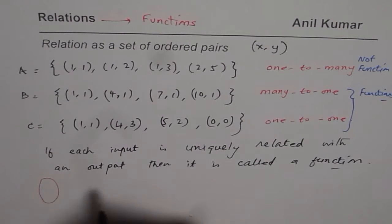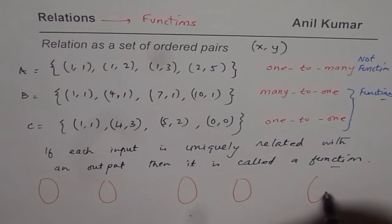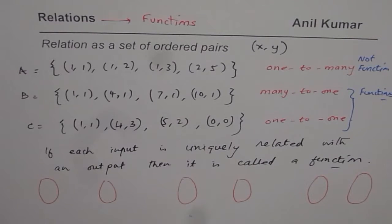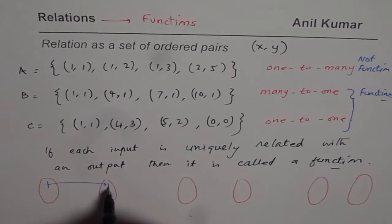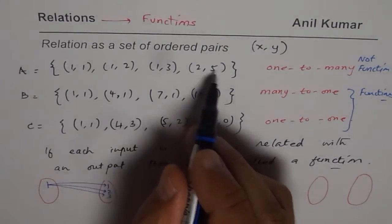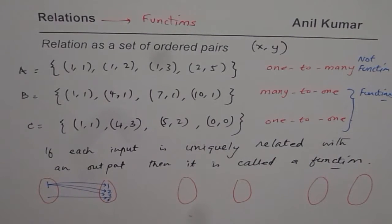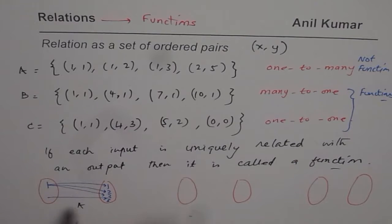You can also see this with the help of a mapping diagram. In sets A, B, and C, let me draw the mapping diagrams. For relation A: 1 is linked with 1, then 1 is also linked with 2, and 1 is also linked with 3, and 2 is related to 5. Since number 1 is related to 3 different things, it is not related with exactly one output — so this is not a function.